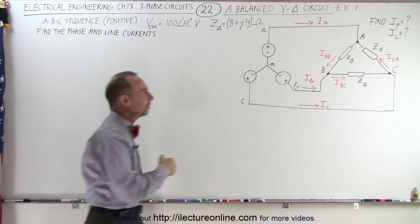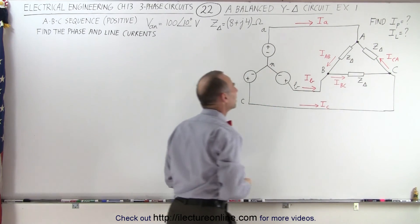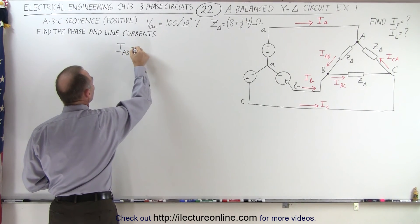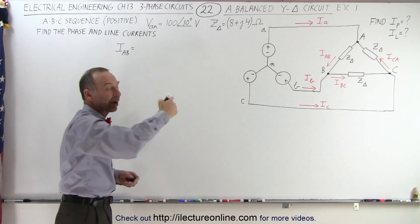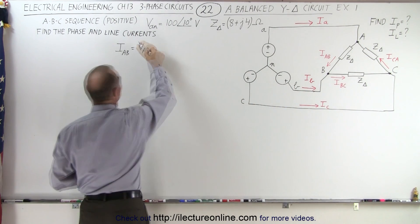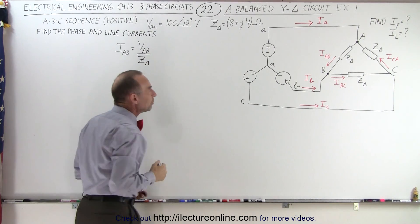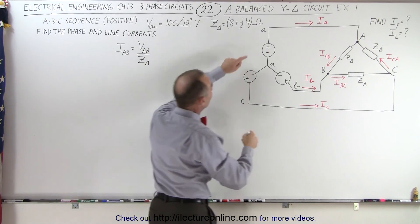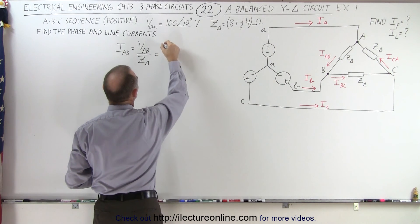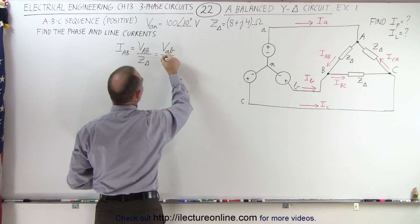Let's start with the phase currents: IAB, IBC, and ICA. Starting with IAB, the current must equal the voltage divided by the impedance — specifically the voltage from A to B divided by the impedance. The voltage from A to B is the same as the voltage V sub AB at the source, so we write this as V small AB, which is the line voltage divided by the impedance.